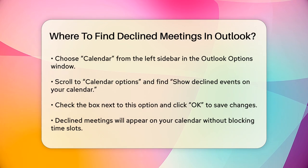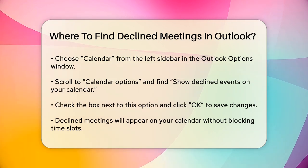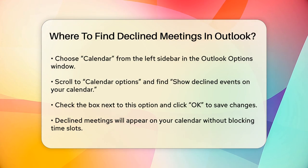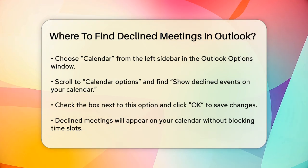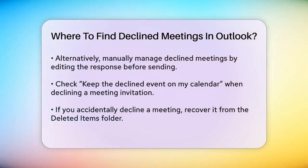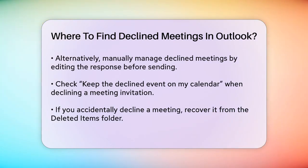Another way to keep declined meetings visible is to manually manage them. When you decline a meeting invitation, instead of sending the response immediately, select Edit the response before sending. In the response window, check the box Keep the declined event on my calendar. This action declines the meeting but keeps it as a transparent event on your calendar.